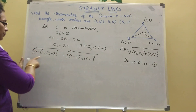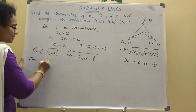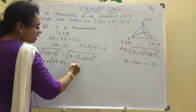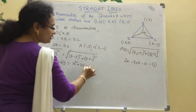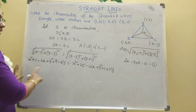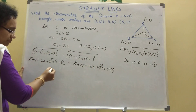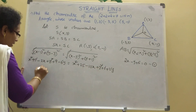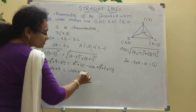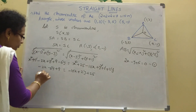Expanding using (a - b)² formula: x² - 2x + 1 + y² - 6y + 9 equals x² - 10x + 25 + y² + 2y + 1. Cancelling x², y², and 1 from both sides. Remaining terms: -2x - 6y + 9 = -10x + 2y + 25.